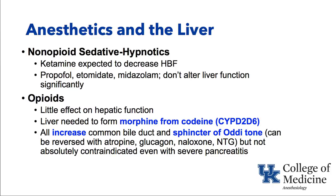Opioids do increase common bile duct and sphincter of Oddi tone, but this can be reversed with drugs including anticholinergics like atropine, glucagon, naloxone — though naloxone will also reverse the analgesic effect — and nitroglycerin. Opioids aren't even absolutely contraindicated in patients with severe pancreatitis, so we don't worry too much about this anymore.